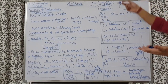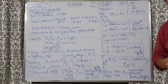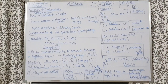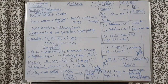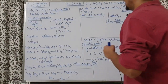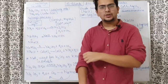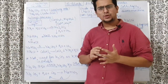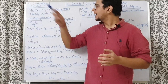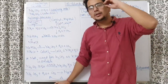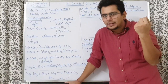Now let us discuss compounds of the first group, starting with Na2CO3. Na2CO3·10H2O is washing soda, while anhydrous Na2CO3 is called soda ash. These two names are different and important to remember.